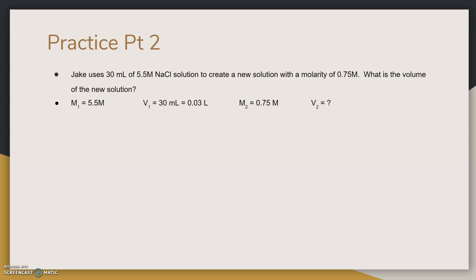By setting the problem up this way, we can identify the missing variable quickly. Molarity 1, or the starting molarity, is 5.5 molarity. Starting volume is 30 milliliters. The ending molarity is 0.75 molarity and the ending volume is unknown.